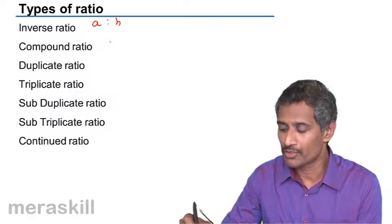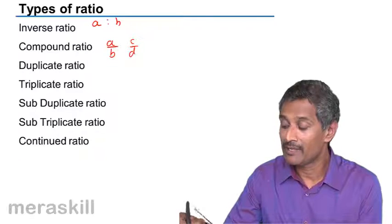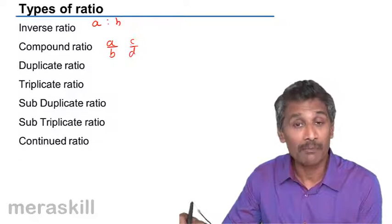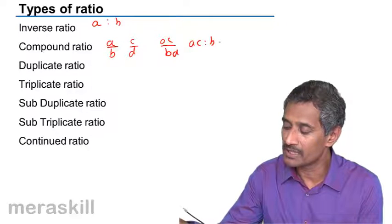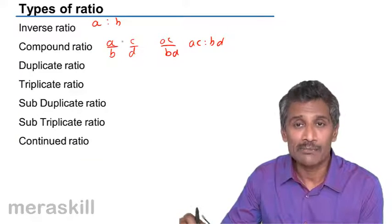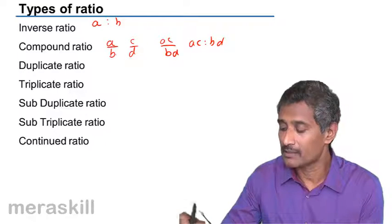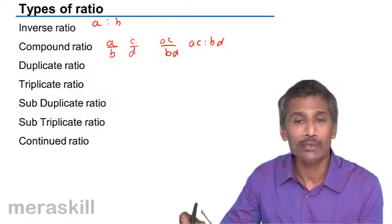Then you have compound ratio. If you take two ratios a by b and c by d, the ratio obtained by compounding these is ac by bd, or in other words ac is to bd. When you talk about compound ratio, you multiply the corresponding antecedents and the corresponding consequents, and the new ratio that you get is called the compound ratio.